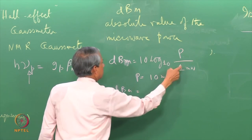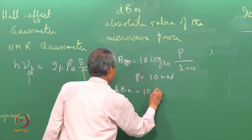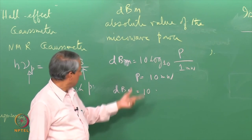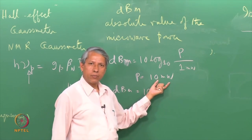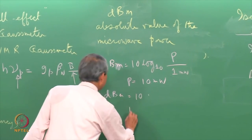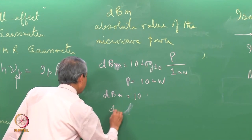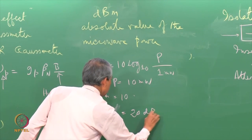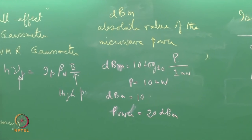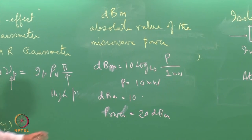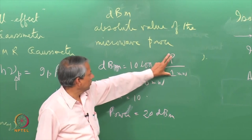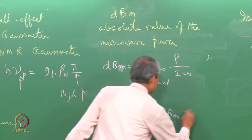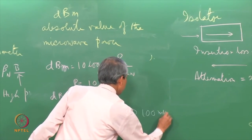But if P is 10 milliwatt, then in dBm will be, this by this is 10, log 10 is 1. So 10 dBm power is equivalent to 10 milliwatt of power. Similarly, the other way round, if power is equal to 20 dBm, what will be the actual power? This will be 20, so this ratio has to be 100. So 100 milliwatt of power corresponds to 20 dBm, this corresponds to 100 milliwatt.